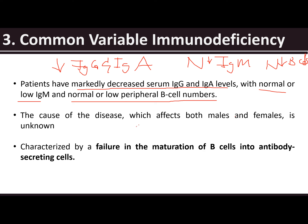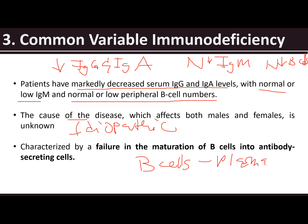The cause of the disease is idiopathic — meaning unknown. This is characterized by a failure in the maturation of B cells into antibody-secreting cells, so there is a problem with B cells becoming plasma cells, causing decreased IgG and IgA, with possibly normal or low IgM and B cells.